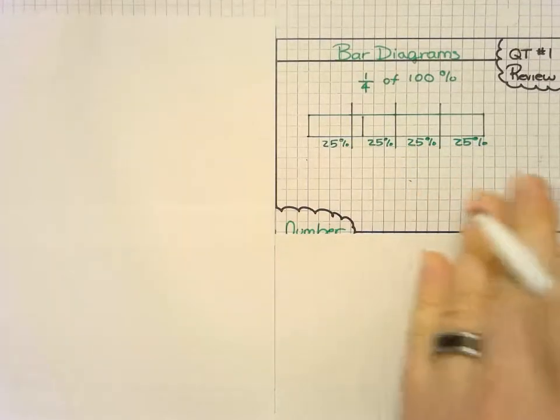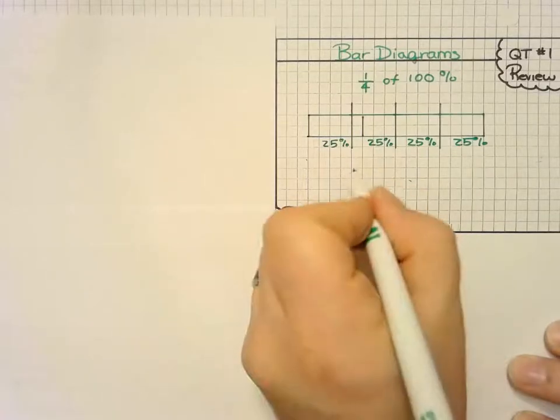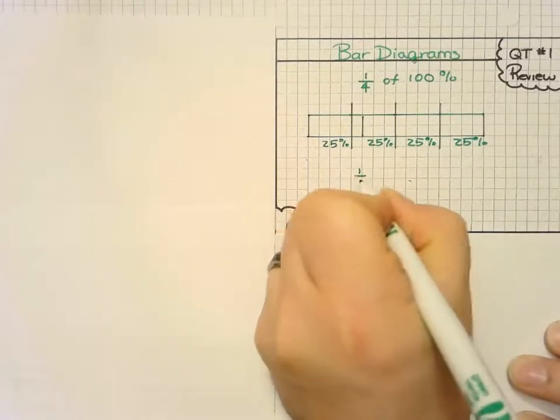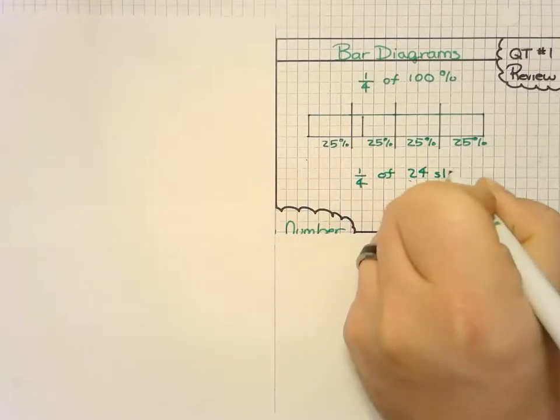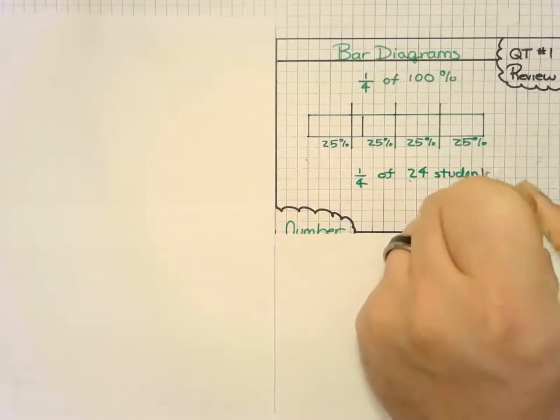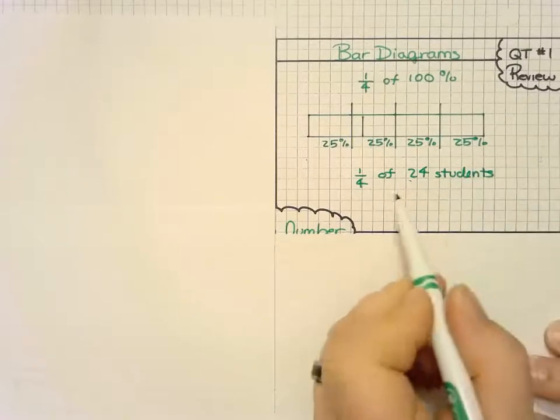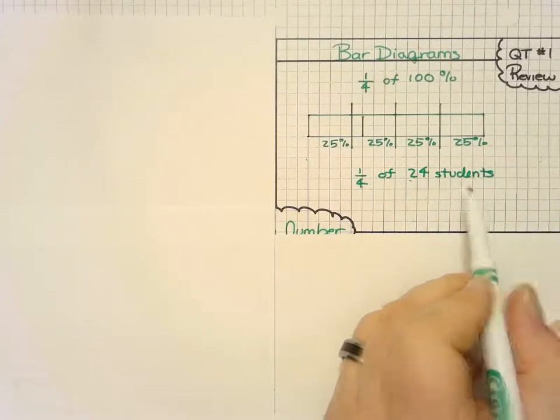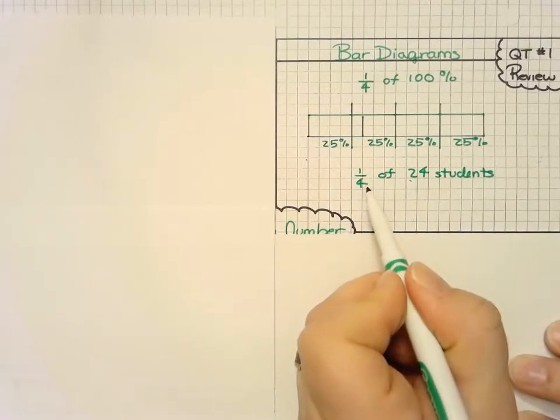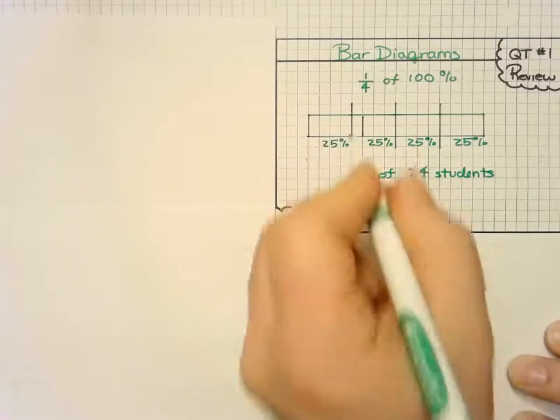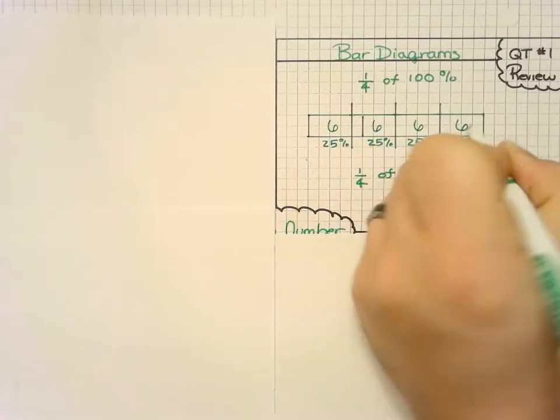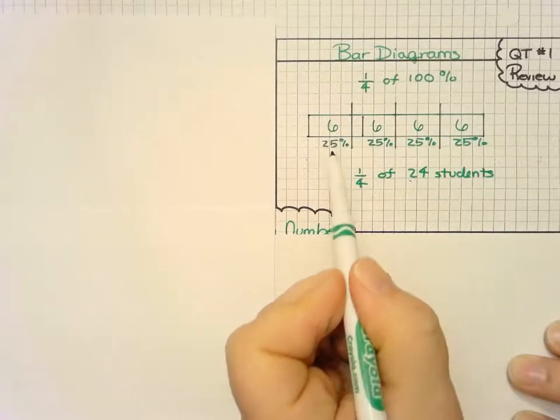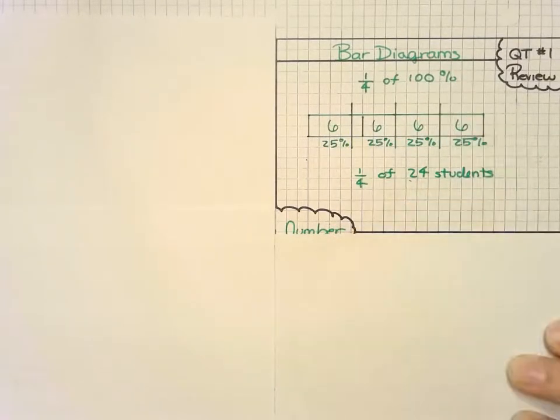So if we wanted to apply this to another situation, for example, one-quarter of 24 students in my class, then how many sections should the bar be divided into? Again, still four, but now I can take that 24 and divide by four, and I get a total of six students, and so now I know that six students is 25% of the 100%.